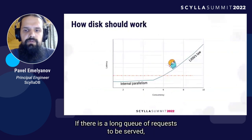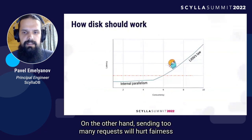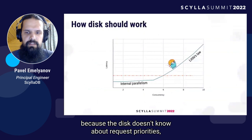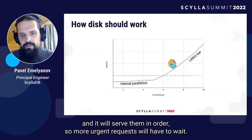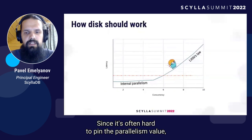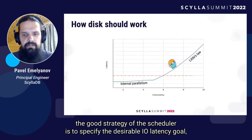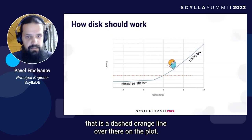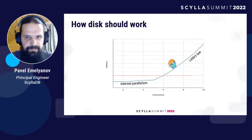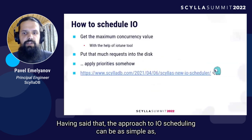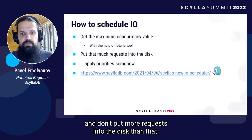If there is a long queue of requests to be served, it's safe to send several of them into the disk. On the other hand, sending too many requests will hurt fairness, because the disk doesn't know about request priorities and will serve them in FIFO order, so more urgent requests will have to wait. Since it's often hard to pin the parallelism value, a good strategy for the scheduler is to specify a desirable IO latency goal — there is a dashed orange line on the plot — and limit the concurrency based on that number. The approach to IO scheduling can be as simple as configuring the maximum concurrency value and not putting more requests into the disk than that.